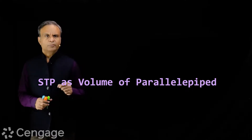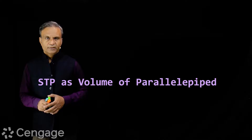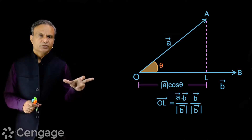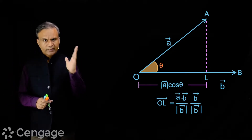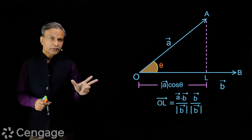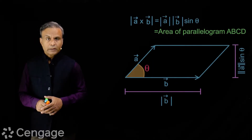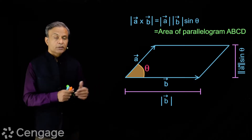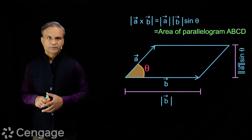Every vector product has its own geometrical interpretations. Using dot product, we can find a component of one vector in the direction of the other vector, or we can remove the component in the direction of the other vector. Using cross product of two vectors, we can find the area of the parallelogram formed by those two vectors.